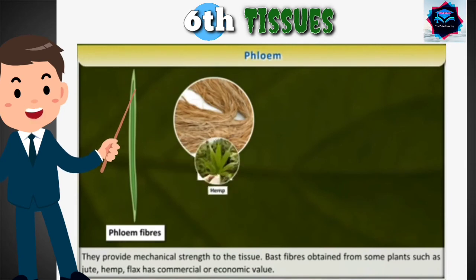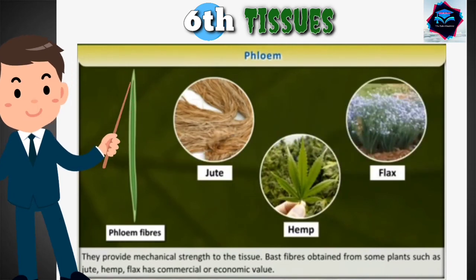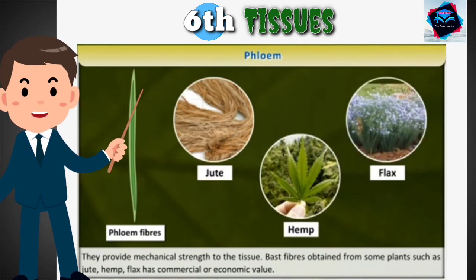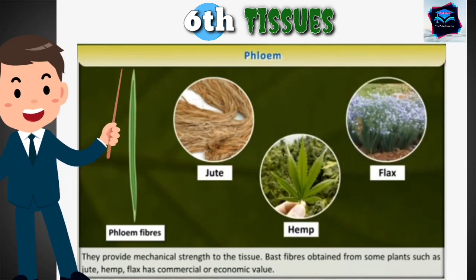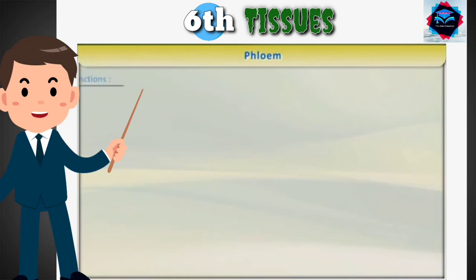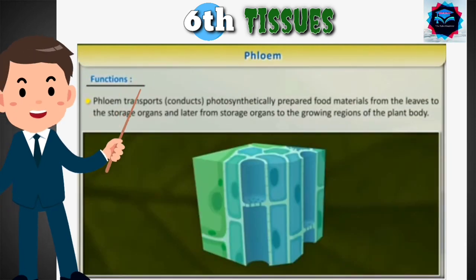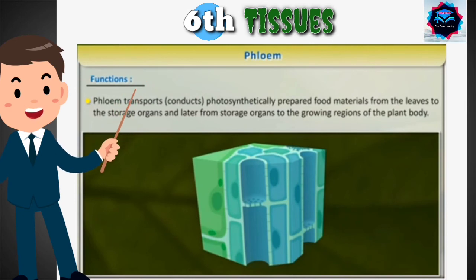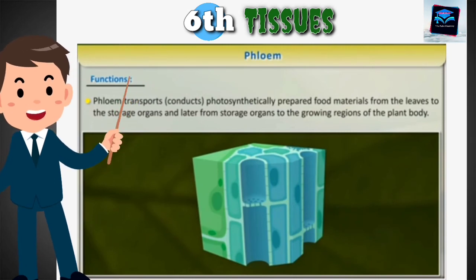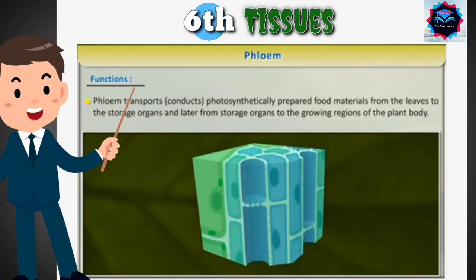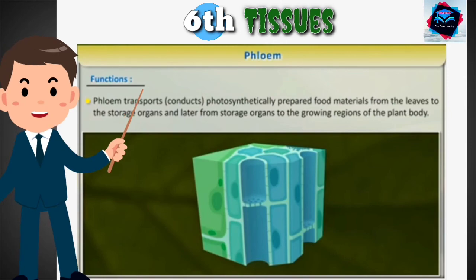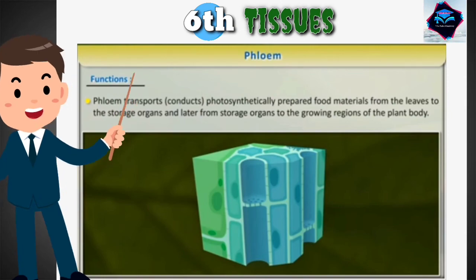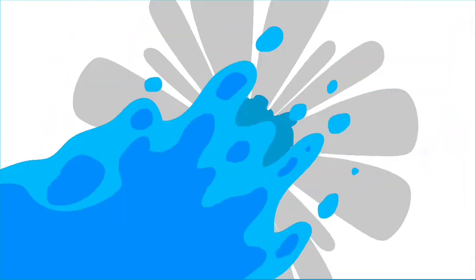Bast fibers obtained from some plants — such as jute, hemp, and flax — have commercial or economic value. Phloem transports and conducts photosynthetically prepared food materials from the leaves to the storage organs, and later from storage organs to the growing regions of the plant body.